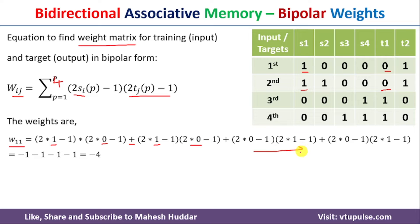Similarly, we write all the remaining terms of the equation, and once you solve it, you get minus 4 as the answer for W11.